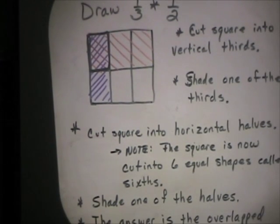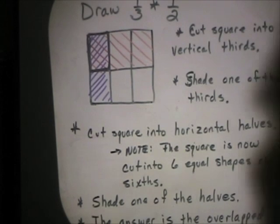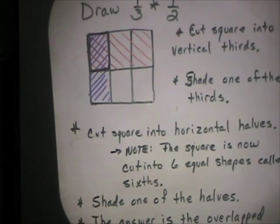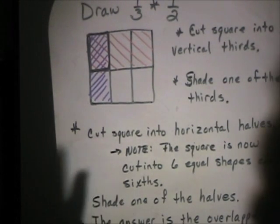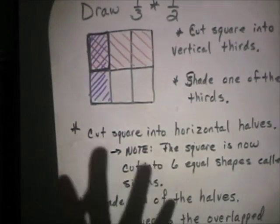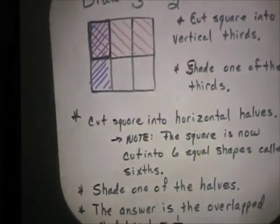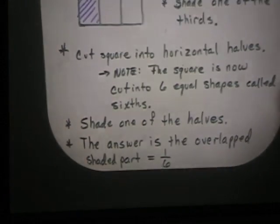Now, the thing that is so neat is you can use this method to illustrate even harder fractions. I tried to make this as easy as possible. But if you understand the concept, you can now go in and take 3/5 times 7/8. Anything like that.